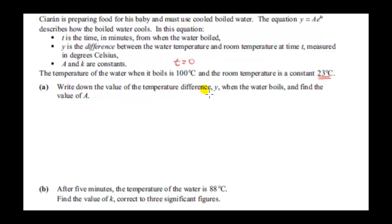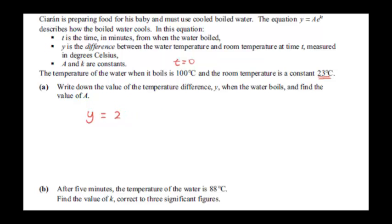We want the value of the temperature difference Y when the water boils. Y is the difference in temperature between the room and the water. We subtract those numbers, but we need to be careful about the sign. We could take room temperature minus water temperature, which gives a negative value. But Y is assumed here to be some positive number, so we want to take the larger value 100 and subtract the smaller value 23. More accurately, we are working out the temperature difference at T equals zero.